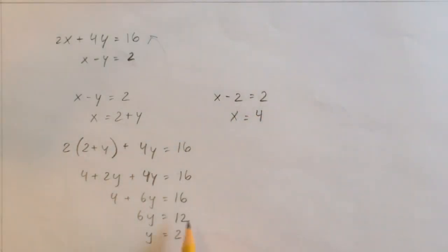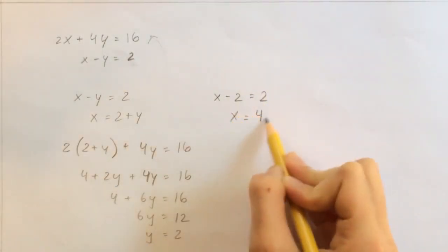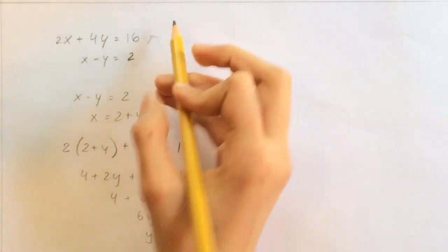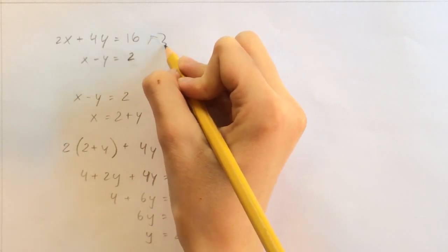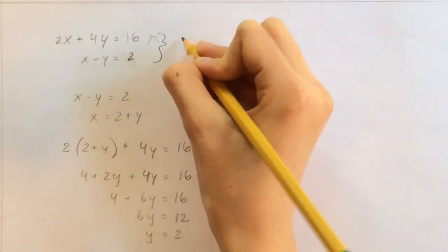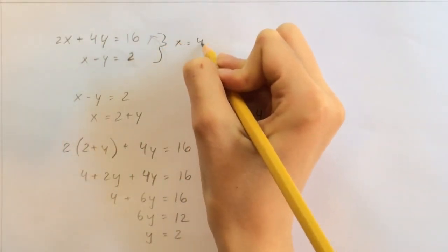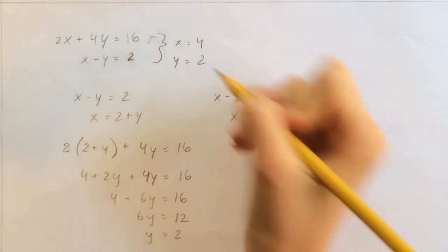So now that we've found that y equals 2, x equals 4, these two numbers, 4 and 2, is really the solution set for these two equations. So the solution set for these two equations is x equals 4, y equals 2.